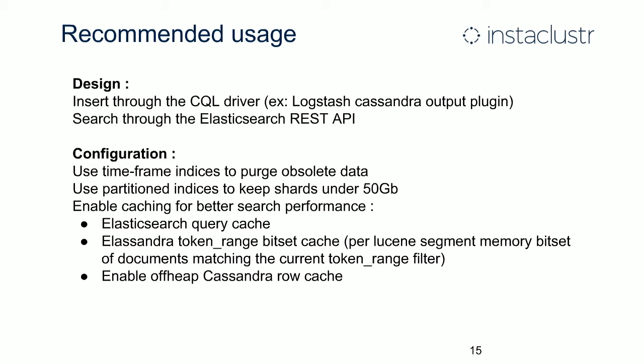You can also install Elasticsearch plugins to benefit from the power of Elasticsearch. For configuration, you should enable various cache levels for better performance, especially the Elasticsearch query cache and the token range bitset cache — a cache level introduced in Elassandra to reduce the cost of the token range filter when searching. You can also enable the off-heap row cache to improve the fetch phase when searching.